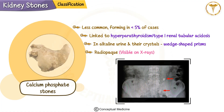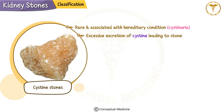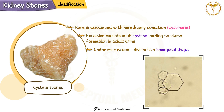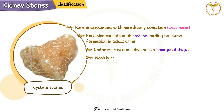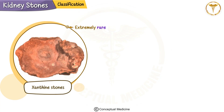Cystine stones are rare and associated with a hereditary condition called cystinuria, which causes excessive excretion of cystine — an amino acid — leading to stone formation in acidic urine. Under the microscope, cystine stones have a very distinctive hexagonal shape making them easy to identify. They are weakly radiopaque, so they may appear only faintly on x-rays.